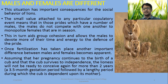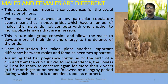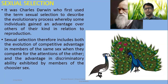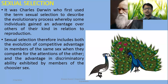Once fertilization has taken place, another important difference between males and females becomes apparent: males do not provide parental care, while females provide a 3.5-month gestation period and continued parental care. The related term is sexual selection. It was Charles Darwin who first used the term sexual selection to describe the evolutionary process whereby some individuals gain an advantage over others in relation to reproduction. Sexual selection includes both the evolution of competitive advantage in members of the same sex when they compete for the attention of the other, and the advantage in discrimination ability exhibited by members of the choosier sex.